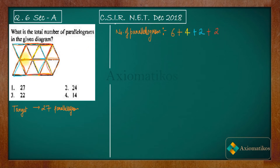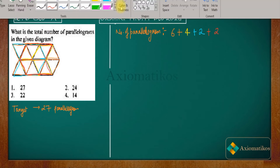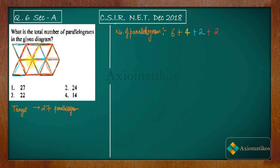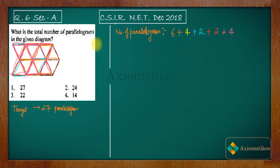Now see that one parallelogram is lying here — one, two. The same for this one: three and then four. So how many parallelograms are we getting? We are getting four more parallelograms. Now let us try to see the complete parallelogram. This one is complete, and a similar one gives two more.